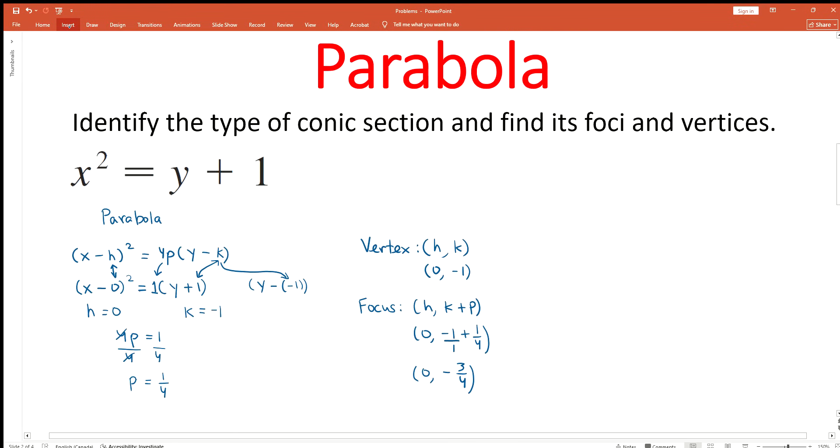We can also use all of this analysis to find the directrix of this parabola. Even though we do not have to find the directrix for this parabola, I can show you the steps for it. This parabola opens in the upward direction. That means the directrix of this parabola is a horizontal line and it is placed below the vertex of the parabola. The general equation of the directrix of a parabola that opens in the upward direction is y = k - p.